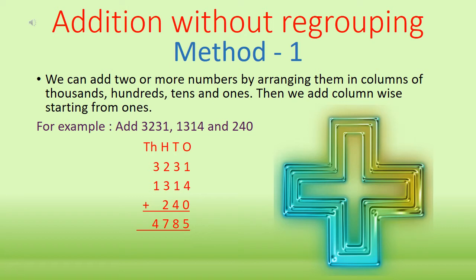First of all, we will arrange these numbers in columns. Let's see which digits are present in the ones column. We have 1, 4, and 0 in the ones column. So let's add them: 1 plus 4 is 5, and 5 plus 0 is 5 again.